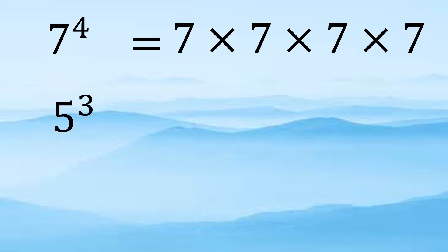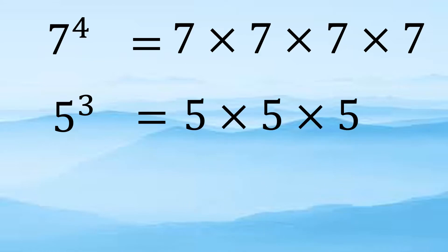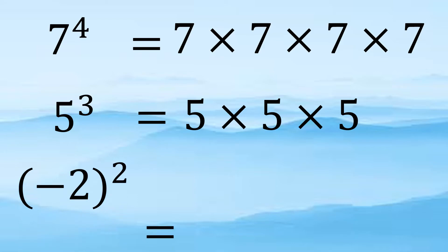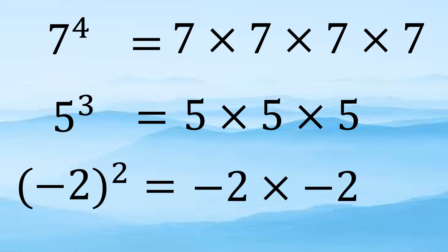5 to the 3rd is equal to 5 times 5 times 5, meaning that 5 is multiplied 3 times by itself. And negative 2 squared is equal to negative 2 times negative 2.